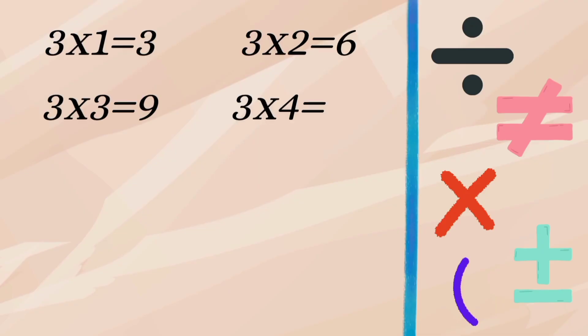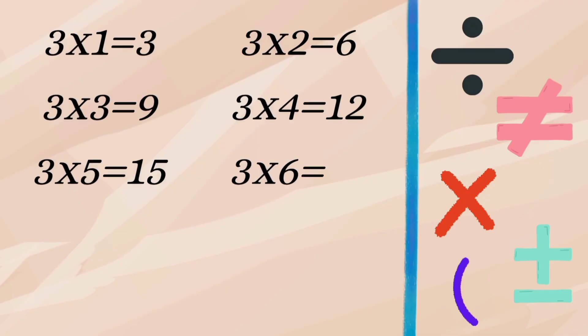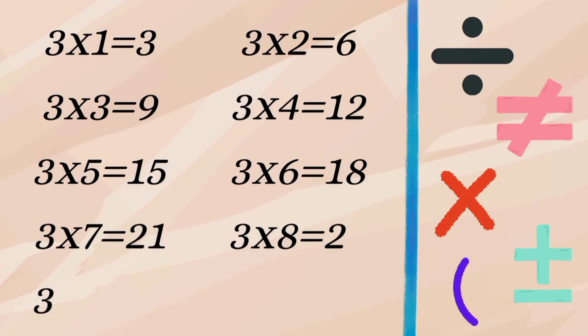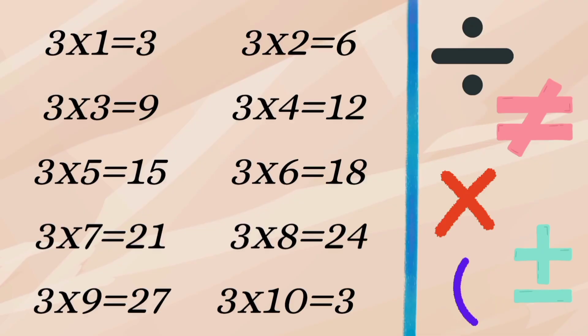Table of 3: 3×1=3, 3×2=6, 3×3=9, 3×4=12, 3×5=15, 3×6=18, 3×7=21, 3×8=24, 3×9=27, 3×10=30.